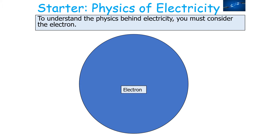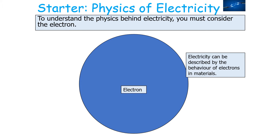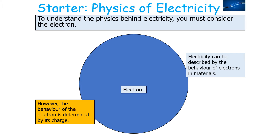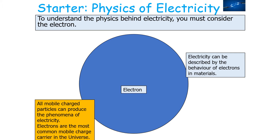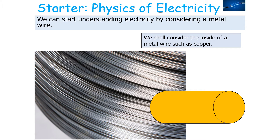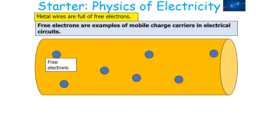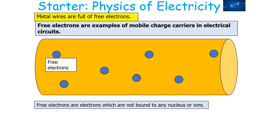To understand the physics behind electricity, you must consider the electron. Electricity can be described by the behaviour of electrons in materials. However, the behaviour of an electron is determined by its charge. All mobile charged particles can produce the phenomena of electricity. Electrons are the most common mobile charge carrier in the universe, but they're not the only one. We can start to understand electricity by considering a metal wire such as copper. Metal wires are full of free electrons, which are examples of mobile charge carriers. Free electrons are electrons which are not bound to any nucleus or ion.